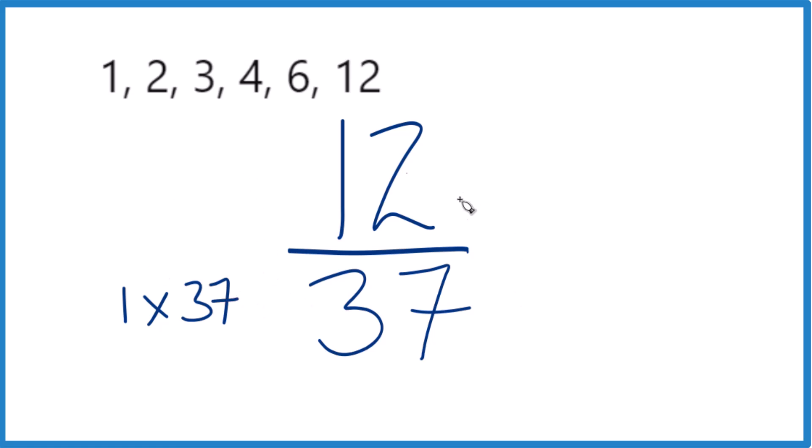So if we look for the greatest common factor, 37, that's not it. Here's 1. Both of these have 1. That's our greatest common factor.